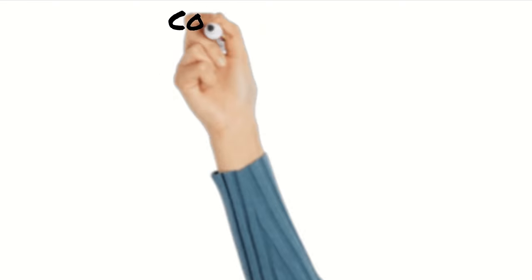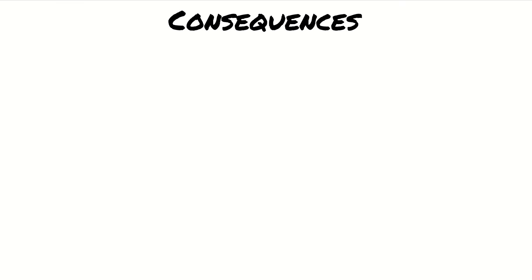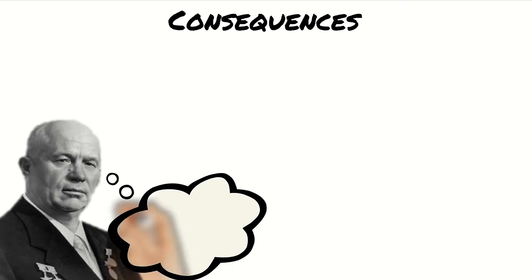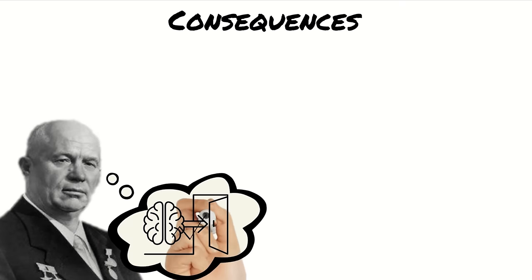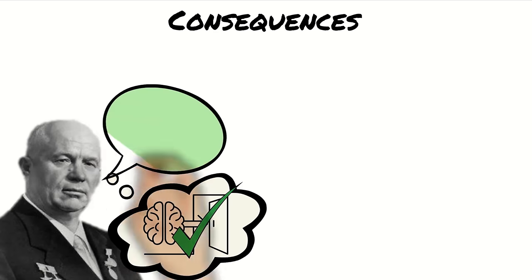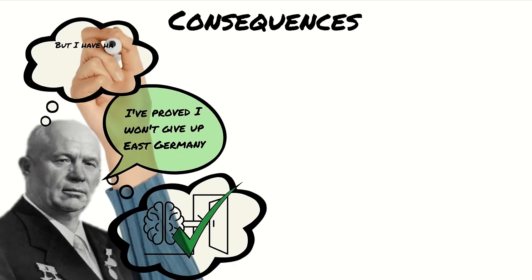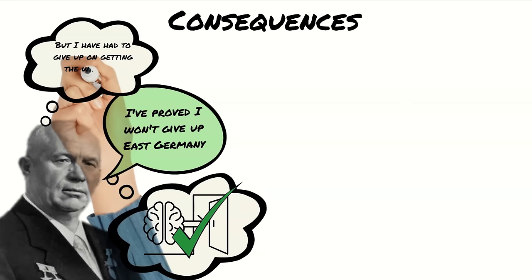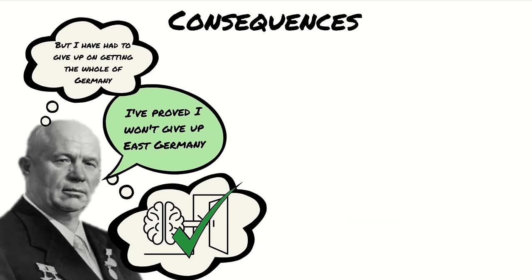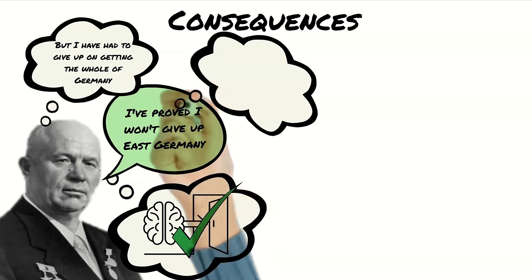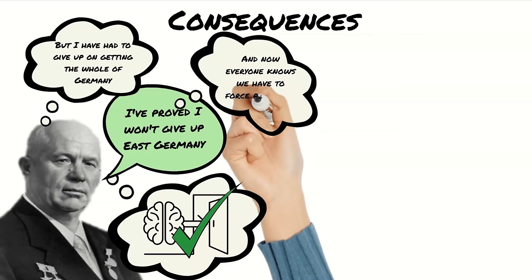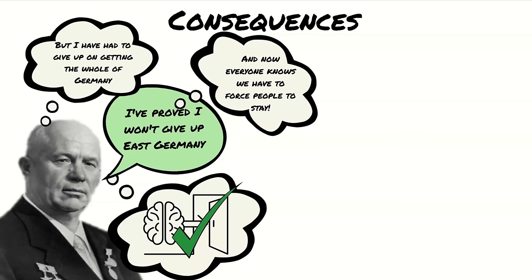The consequences of the wall were huge for both sides. For Khrushchev, the wall did solve the problem of the brain drain — it was no longer possible to travel easily between the two Berlins. The building of the wall also sent a clear message to the West that the USSR would not give up on East Germany. However, it also meant that Khrushchev had to give up on his plans to unite Germany within the USSR, and it was a propaganda disaster because it showed that they literally had to lock people up to make them stay in a communist country.